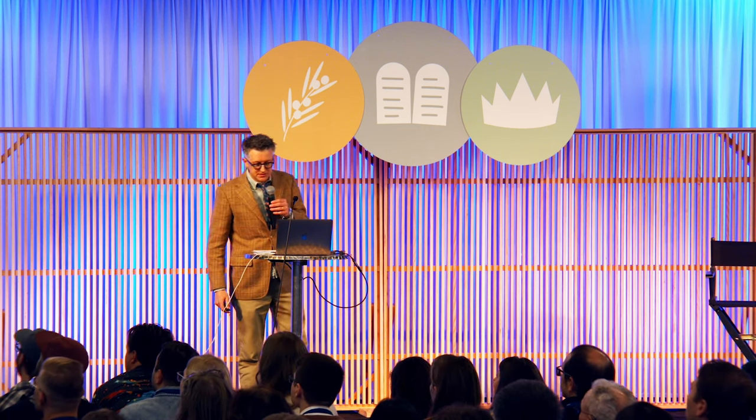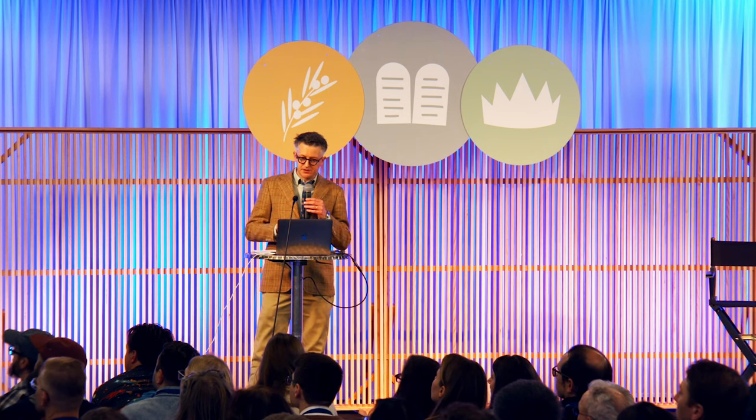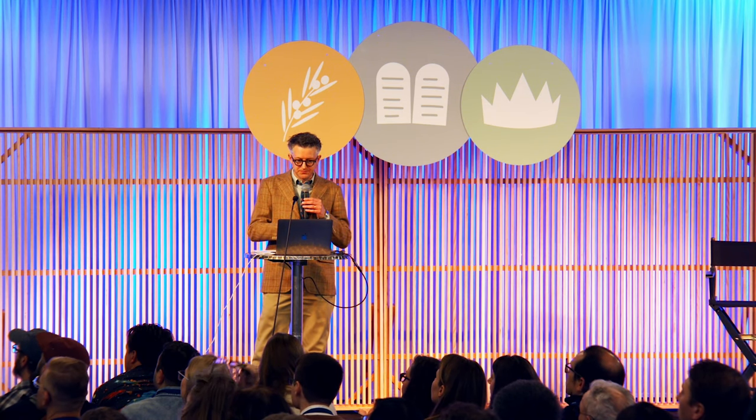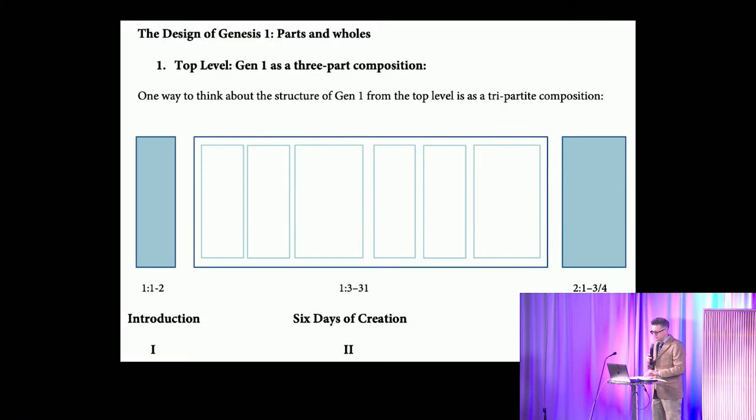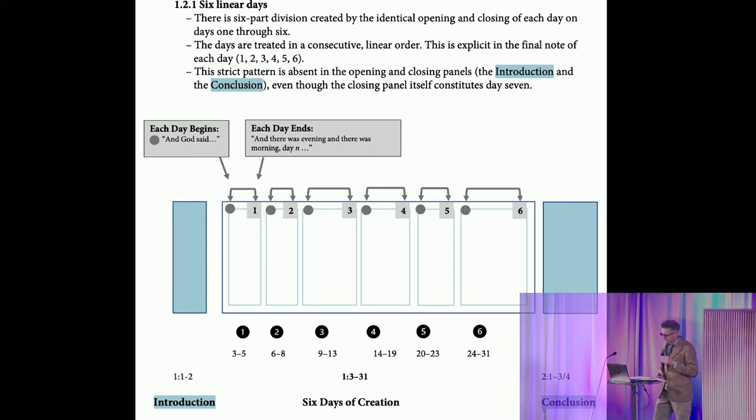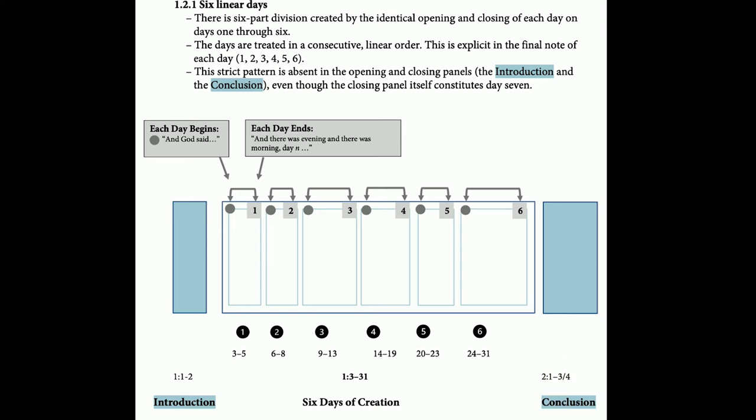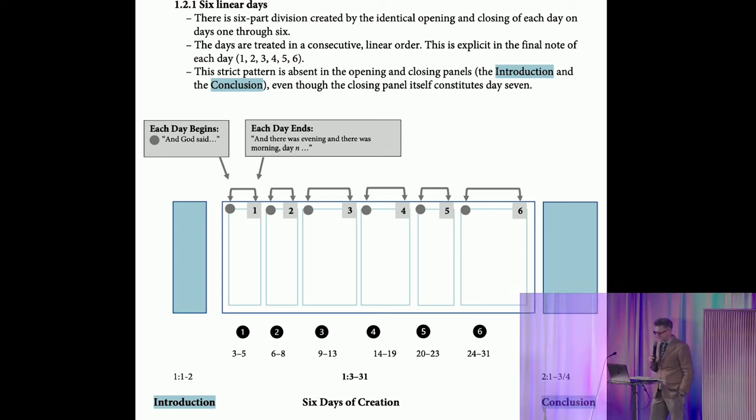One way to think about the structure of Genesis 1 from the top level is as a tripartite composition, with an introduction, six days of creation, and then a conclusion. Now, these three units all have a complex internal structure. Let's look first at the central panel. Here, there is a six-part division created by the identical opening and closing of each day on days 1 through 6. And God said, and it was evening, and it was morning, day 1, 2, 3, 4, 5, 6.